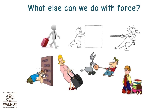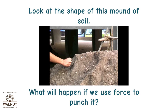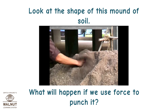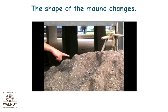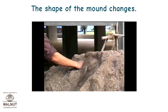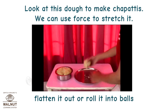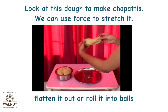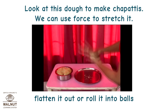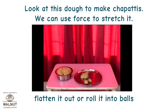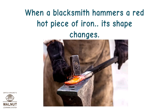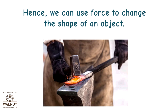What else can we do with force? Look at the shape of this mound of soil. What will happen if we use force to punch it? The shape of the mound changes. Look at this dough to make chapatis. We can use force to stretch it, flatten it out, or roll it into balls. When a blacksmith hammers a red hot piece of iron, its shape changes. Hence, we can use force to change the shape of an object.